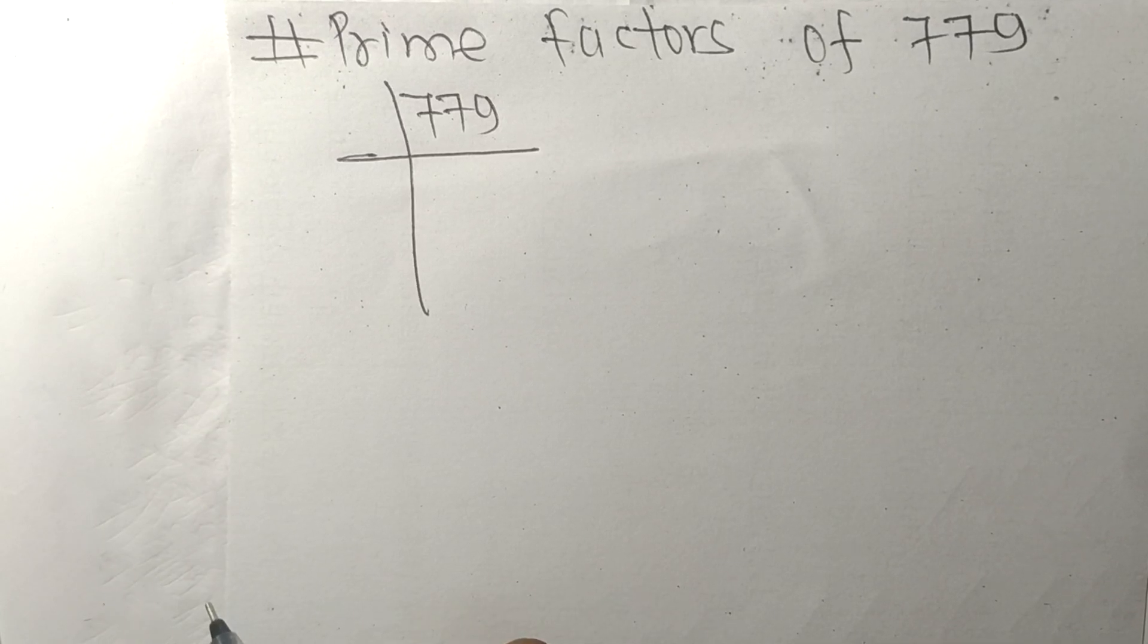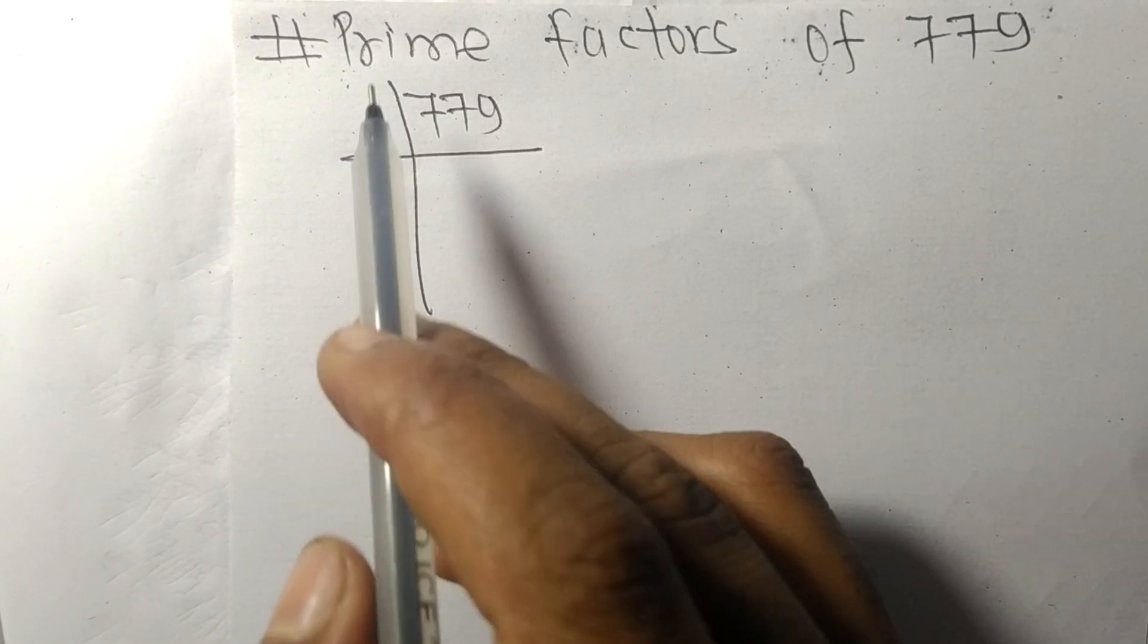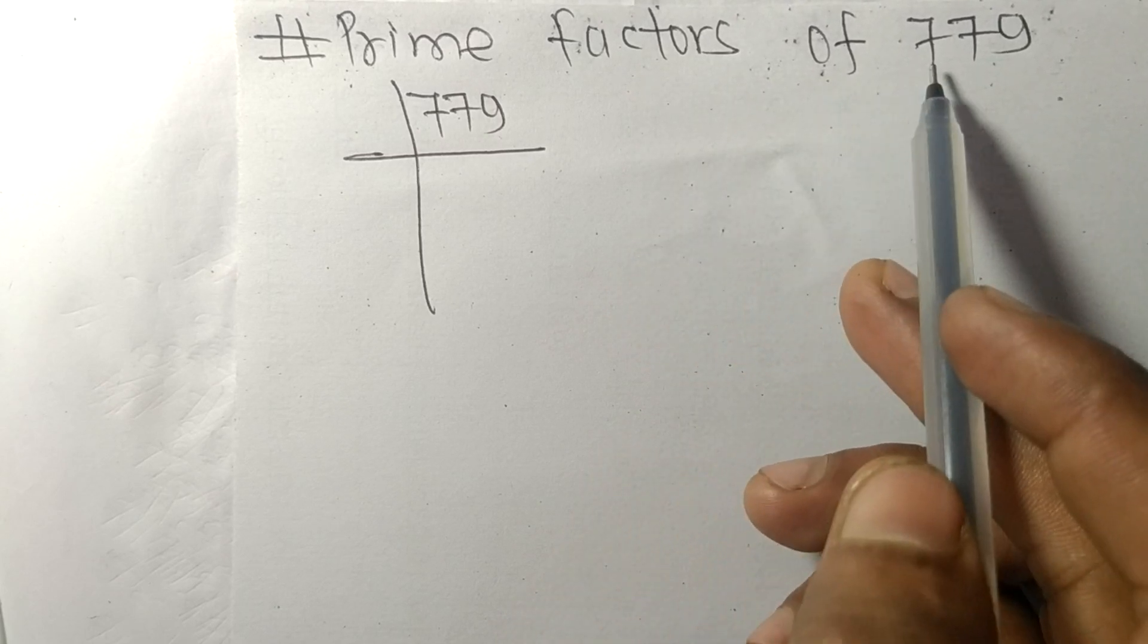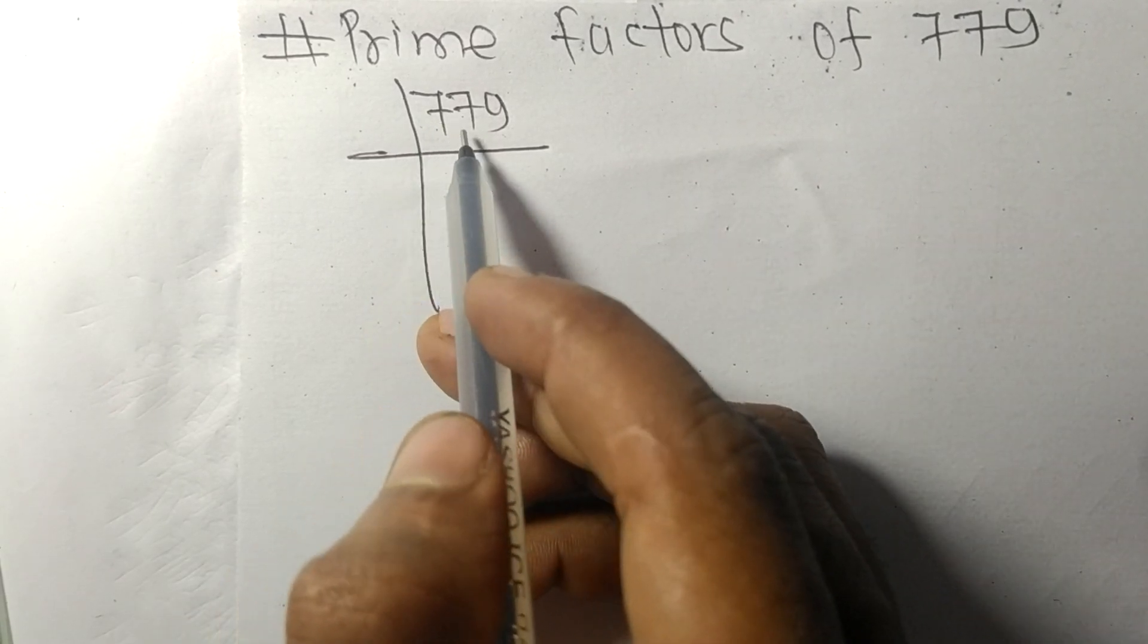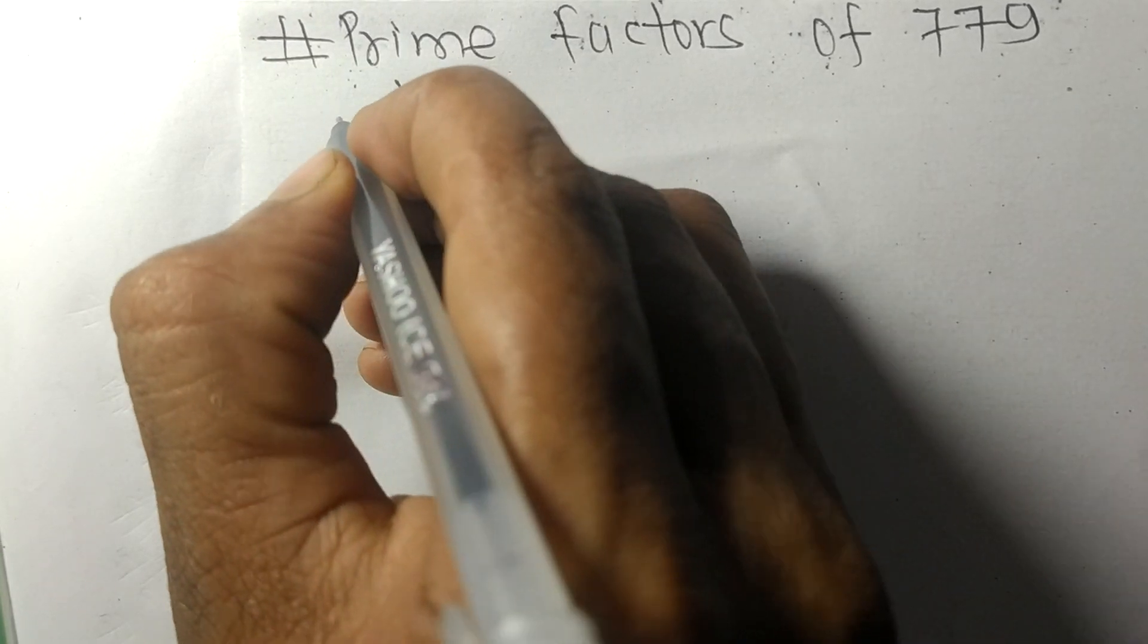So today in this video we shall learn to find the prime factors of 779. 779 is exactly divisible by 19.